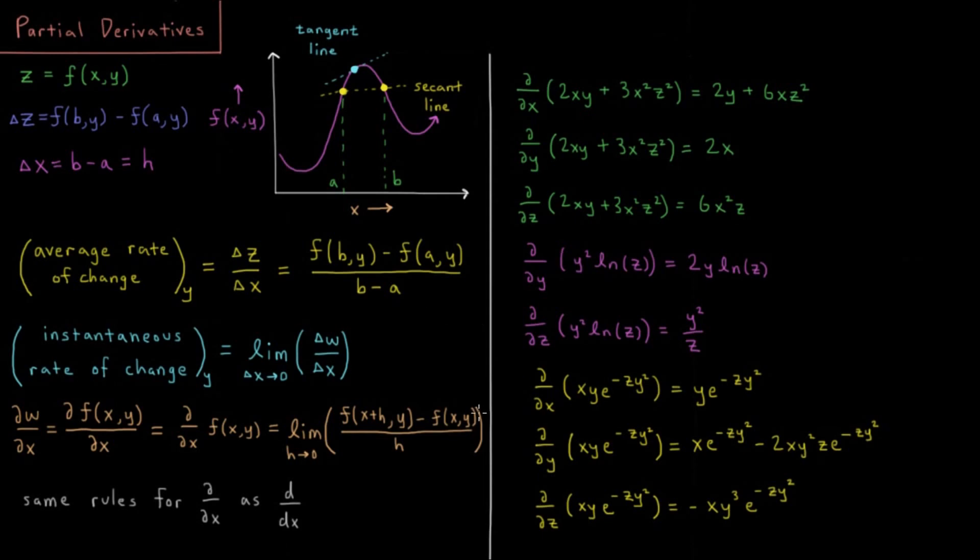And then finally, a function where we'd have to use the chain rule sometimes. We have d/dx of xy e to the minus zy squared. With respect to x, everything else is constant, so we just differentiate x, which gives us one, leaving us with ye to the minus zy squared.